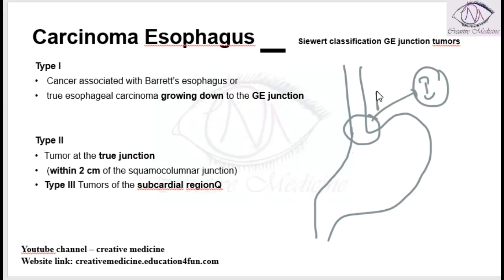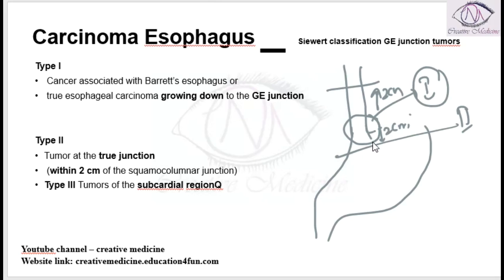In Type 2, the tumor is present at the true junction, that is within 2 cm on either side of the squamo-columnar junction. So the tumor is present 2 cm within the squamo-columnar junction — that is Type 2.